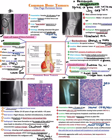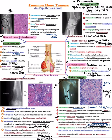Ewing sarcoma is found in the diaphysis. On radiology, you find an onion skin appearance — very important. On histopathology, it is a small round blue cell tumor and shows Homer-Wright pseudorosettes. For the gene mutation: 'wings help you fly' — the gene is EWSR1-FLI1. E for 11, double of 11 is 22, so it is associated with translocation t(11;22). This tumor is responsive to chemotherapy.